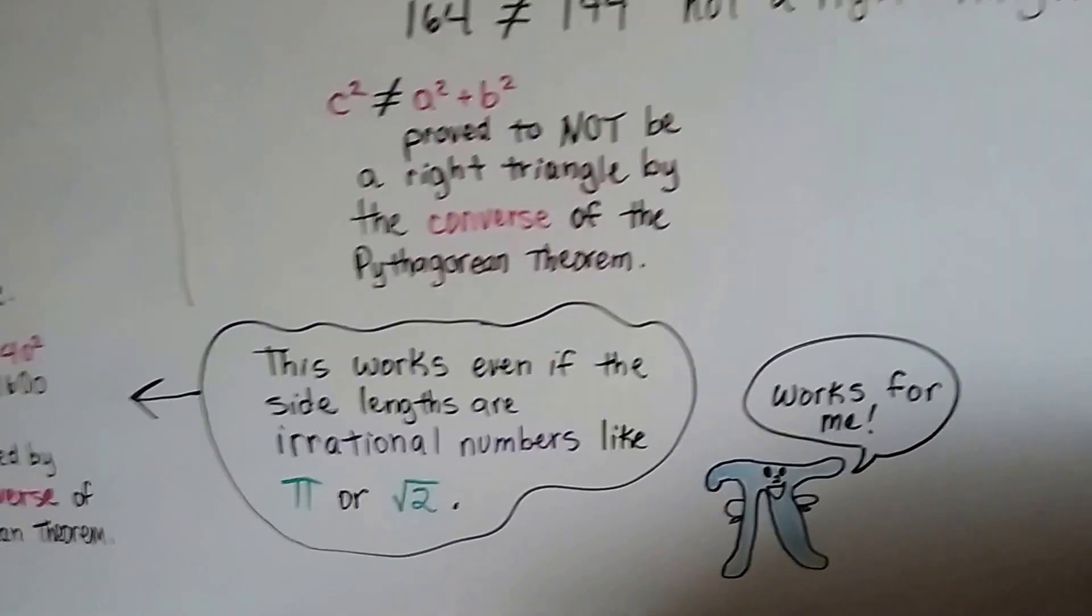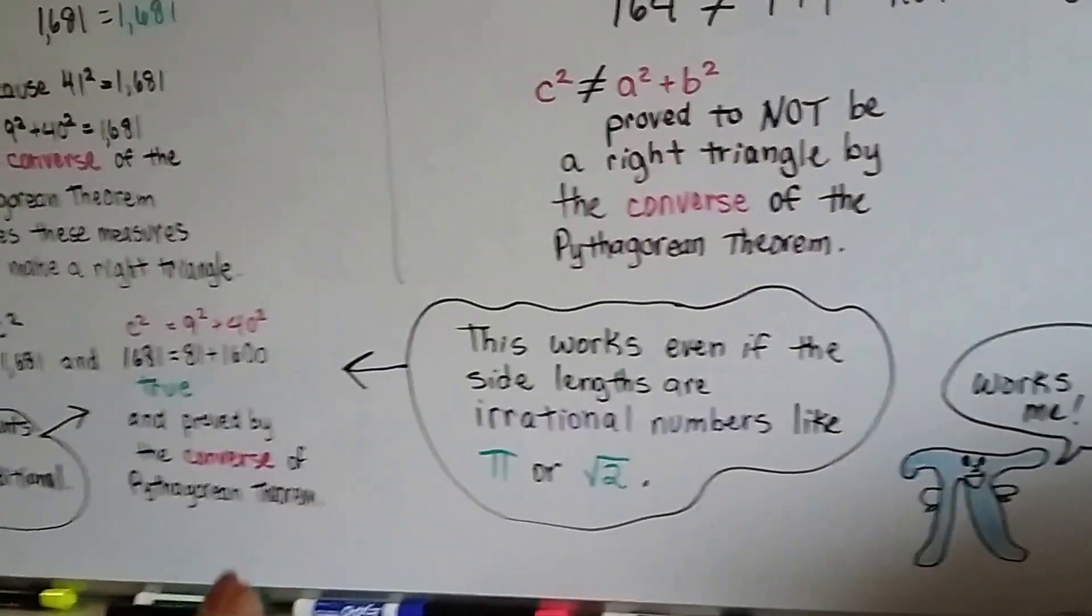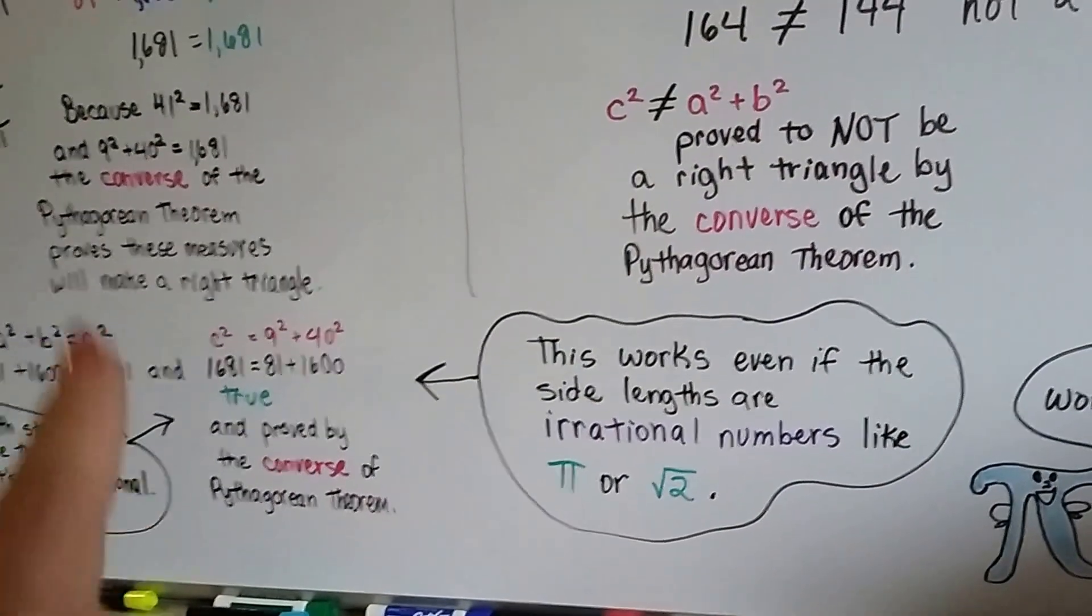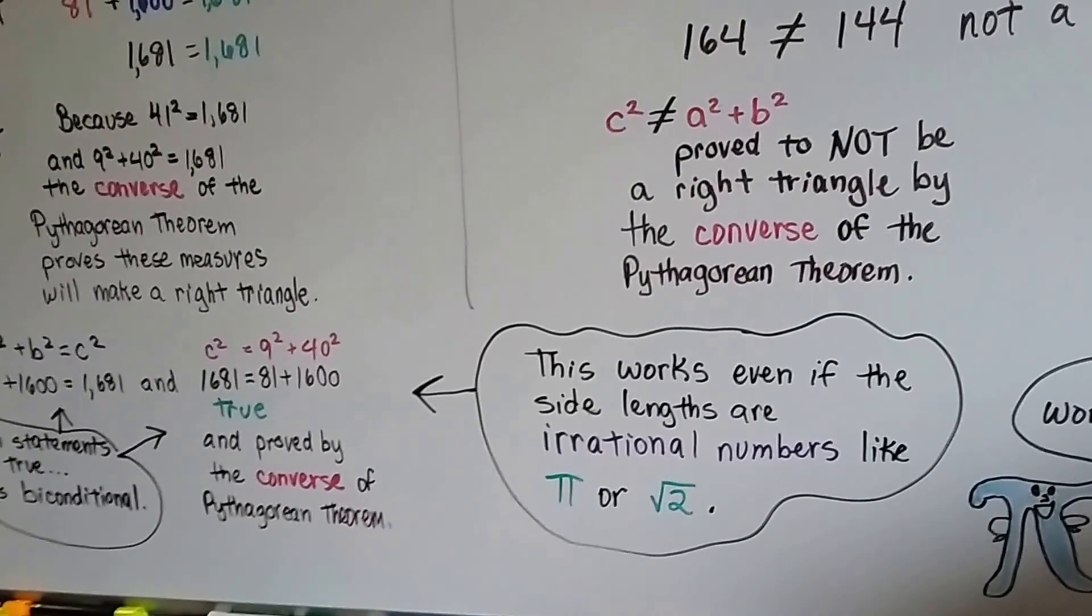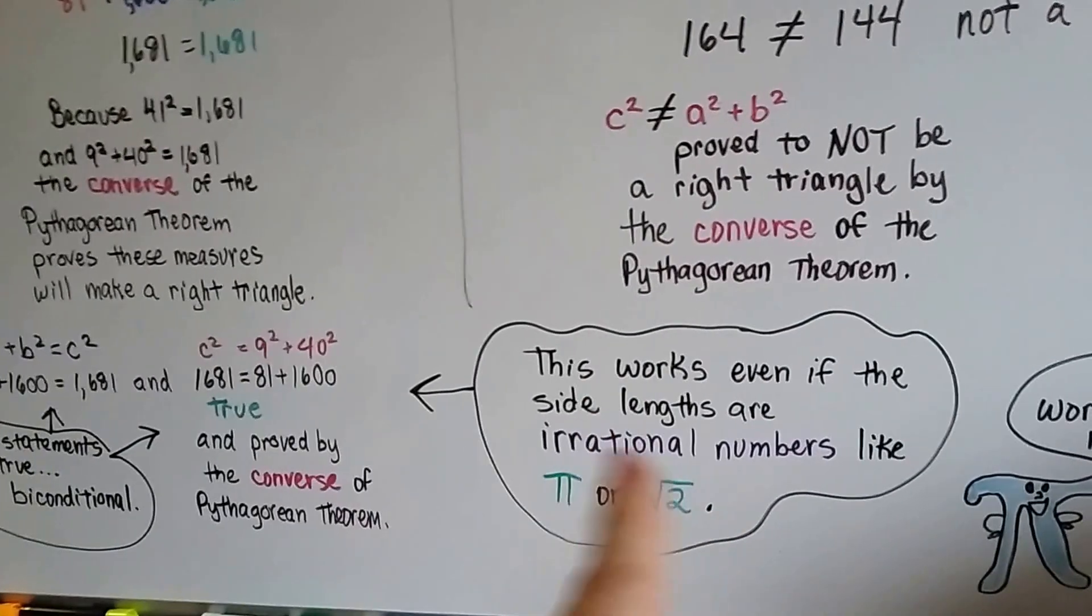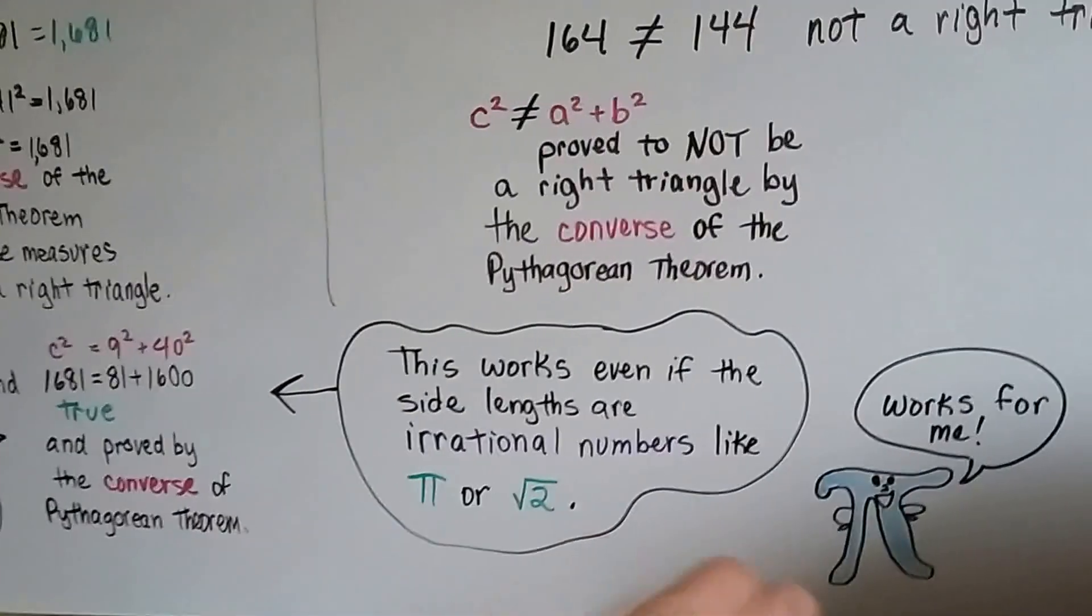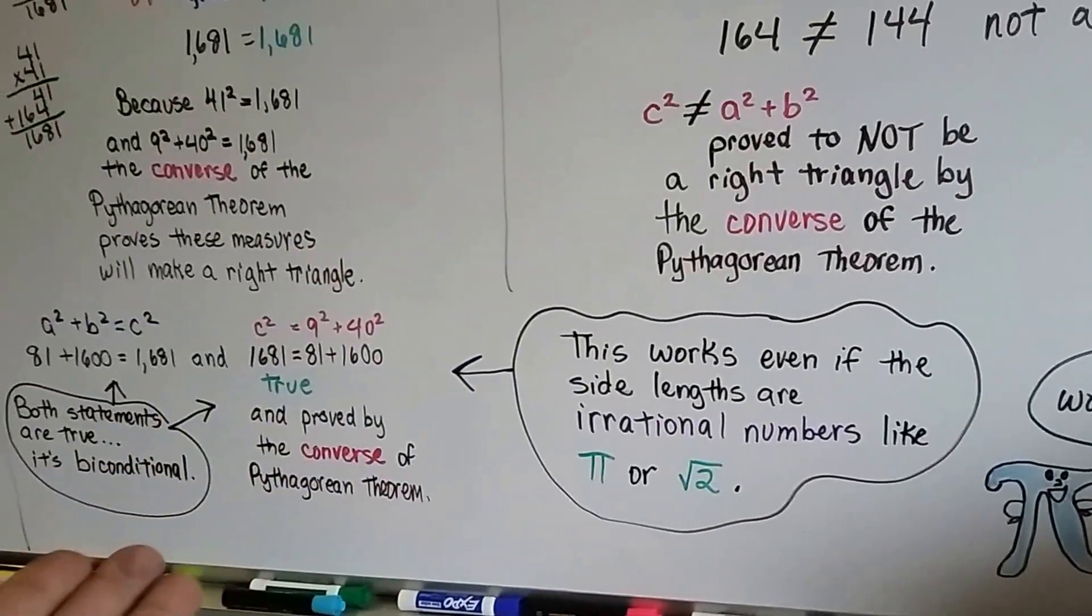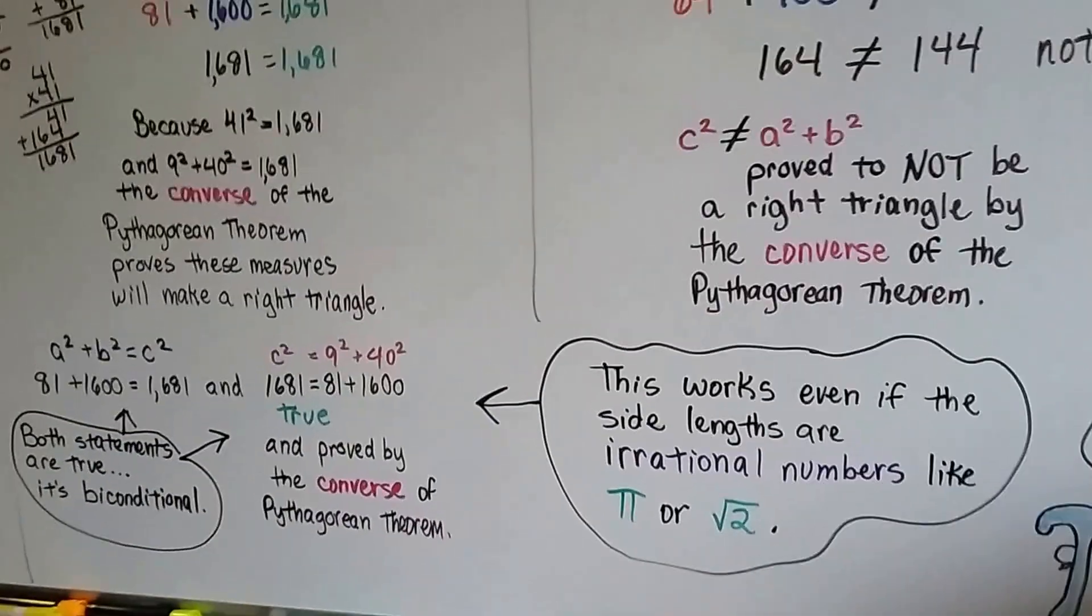Now, this works even if the side lengths are irrational numbers, like pi or the square root of 2. You can use the converse of the Pythagorean theorem. So if you have three measures, and one of them is an irrational number, like pi, it'll work. You can use the converse.